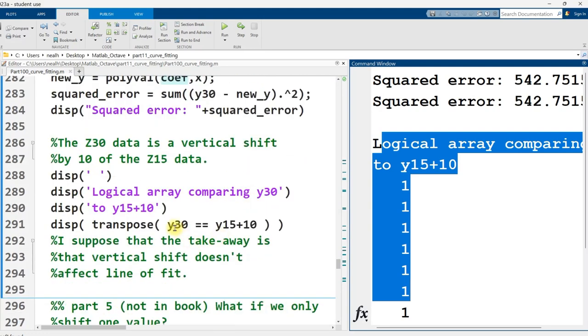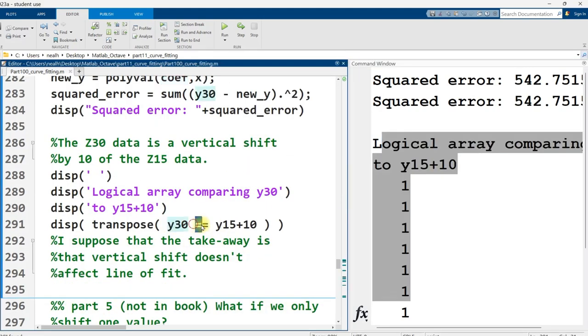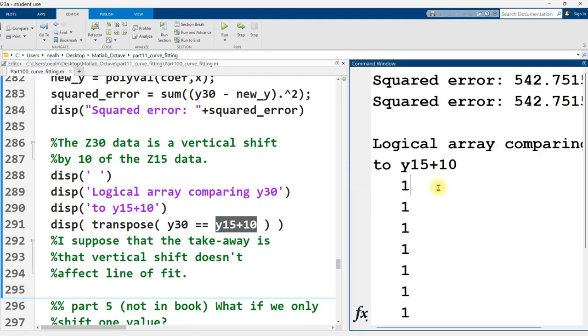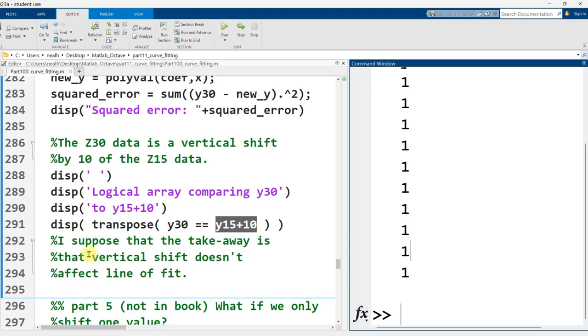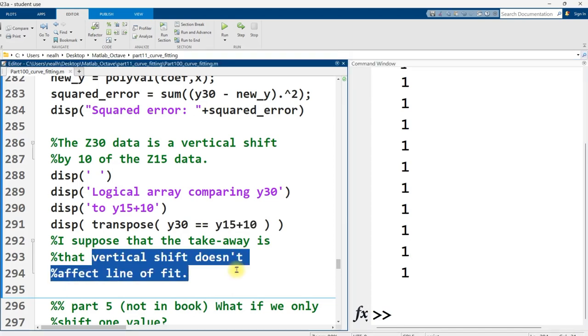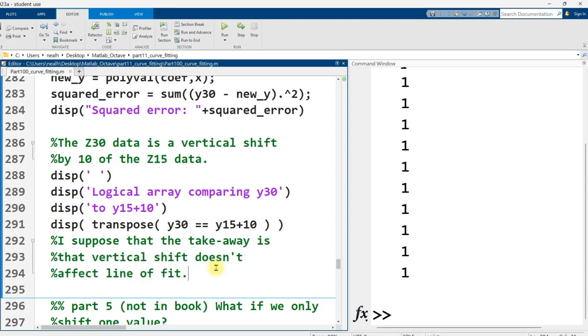And I wrote this code to just check and see, is the data from Y30 literally just the Y15 data plus 10? And remember that one is used to represent true. And yeah, it's just true. It's all true. The takeaway from all this, I believe that the point the book is trying to make is simply that a vertical shift does not affect the line of fit. This is like if you're in calculus class, and you add a constant or subtract a constant from some equation that you've got. It doesn't affect the derivative of that equation. Well, it wouldn't affect the line of fit either because we're just changing the magnitude of all the values involved. We're not changing the relationship between the values.